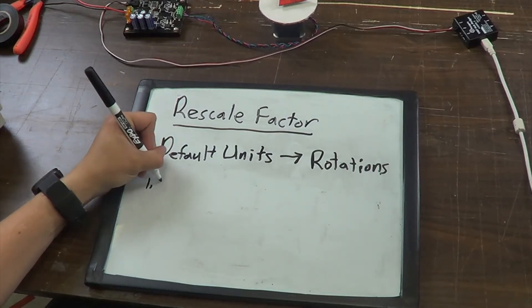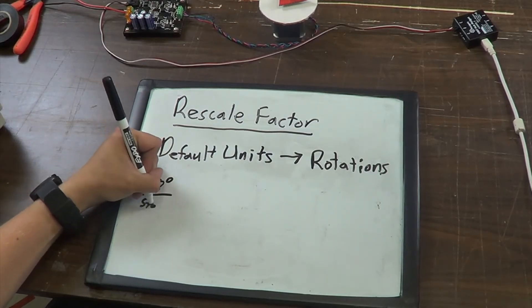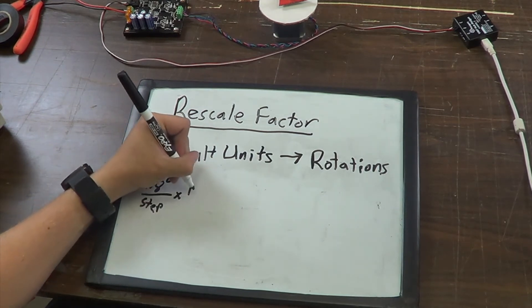Now that we've calculated a rescale factor for degrees, let's move on to rotations. If you take your 1.8 degree step angle, multiply it by one rotation per 360 degrees,